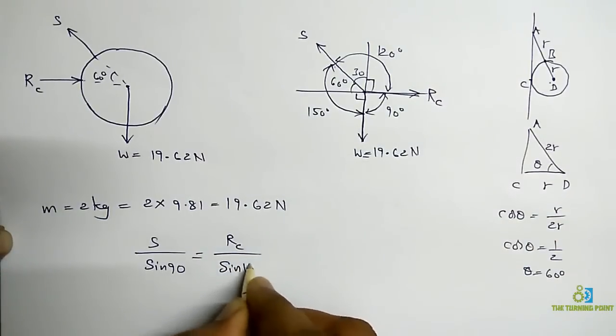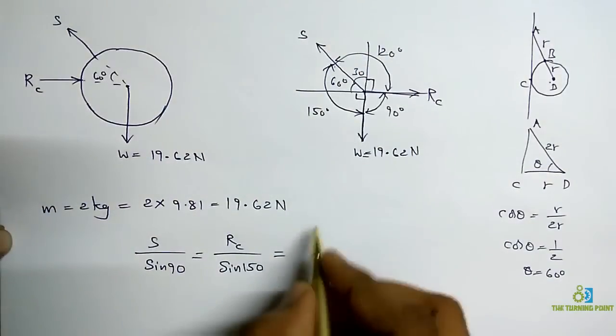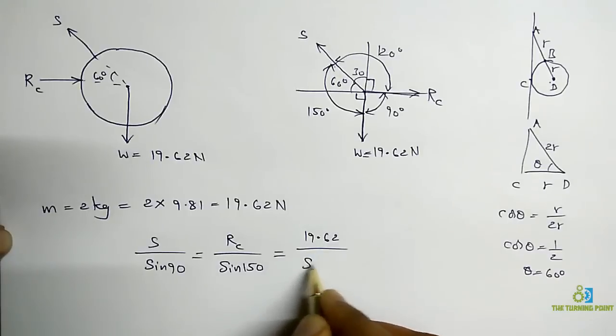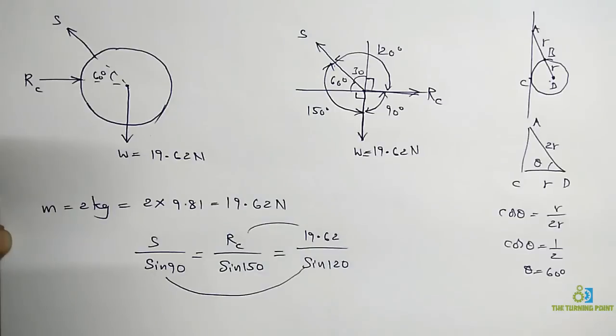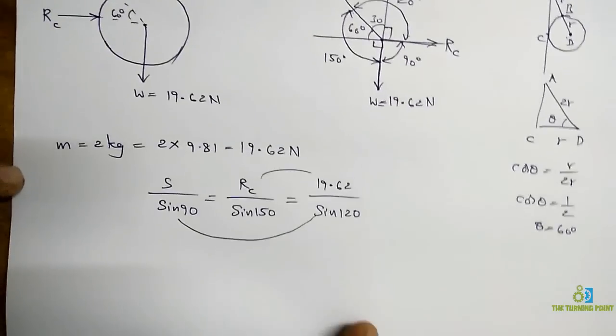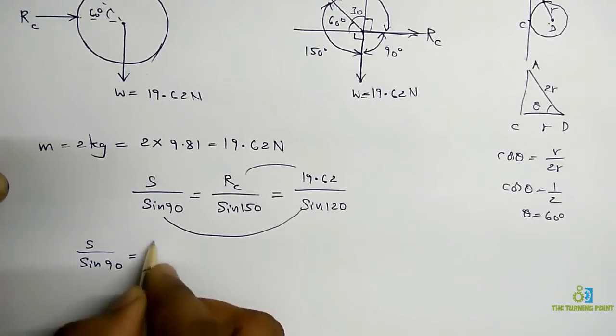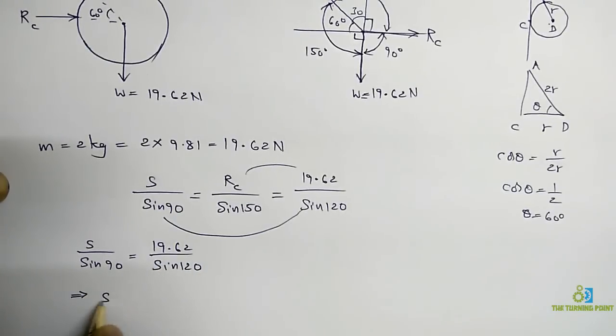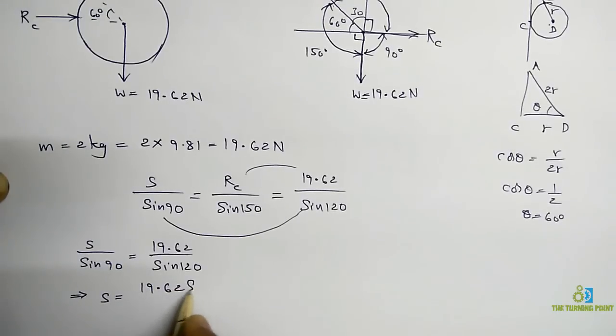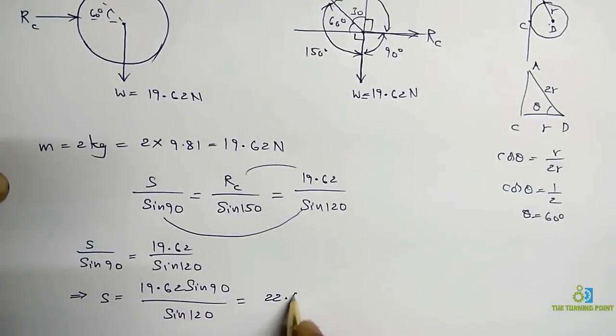So if you want to find the value of S, equate these two. So S divided by sin 90 is equal to 19.62 divided by sin 120. From that S is equal to 19.62 sin 90 divided by sin 120. So when you solve that you will get 22.65 Newtons.